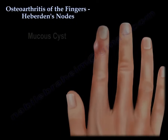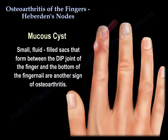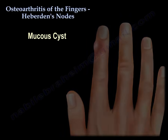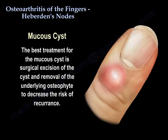Mucous cysts are small, fluid-filled sacs that form between the DIP joint of the finger and the bottom of the fingernail, and are another sign of osteoarthritis. The best treatment for the mucous cyst is surgical excision of the cyst and removal of the underlying osteophyte to decrease the risk of recurrence.